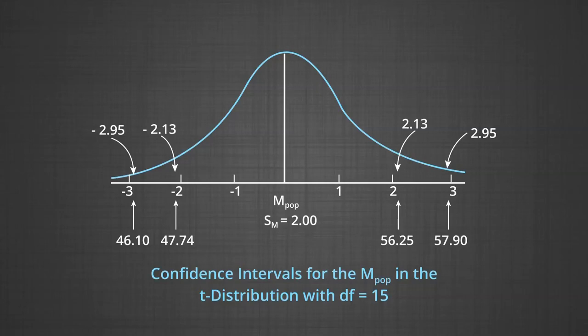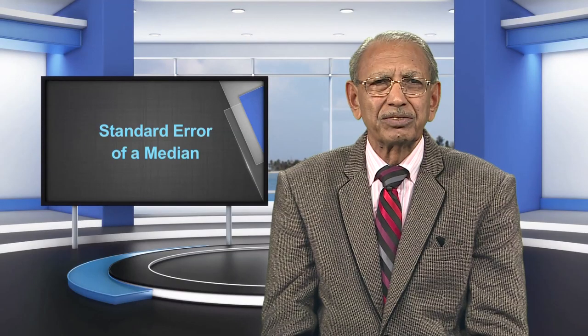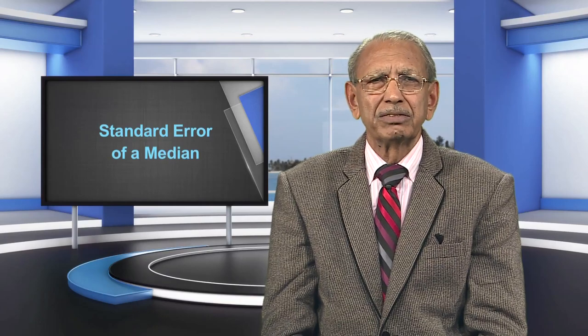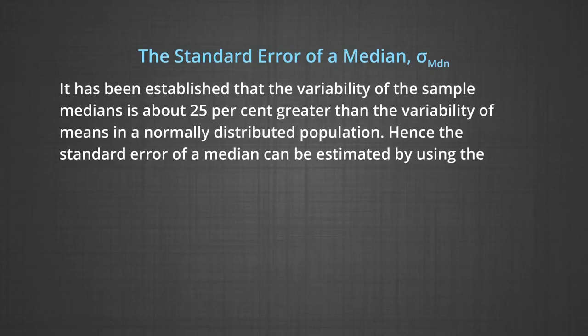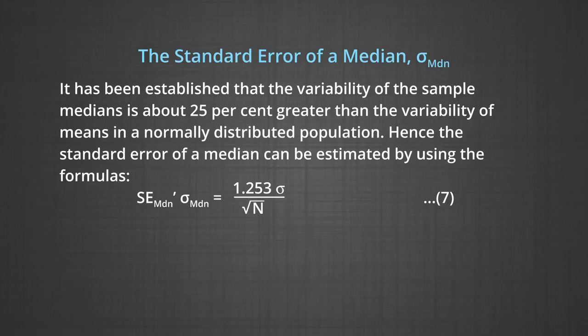The confidence intervals are from 47.74 to 57.25 at the 0.05 level and 46.10 to 57.90 for the 0.01 level, as shown in the figure. After showing the calculation of the standard error of the mean, we come to the calculation of the standard error of a median. It has been established that the variability of the sample medians is about 25% greater than the variability of means in a normally distributed population.